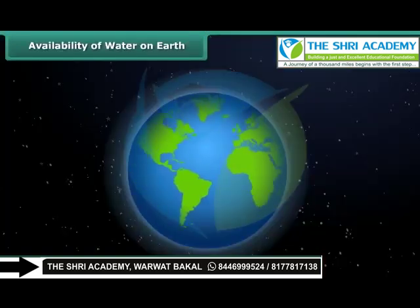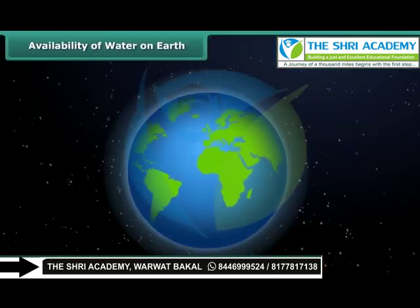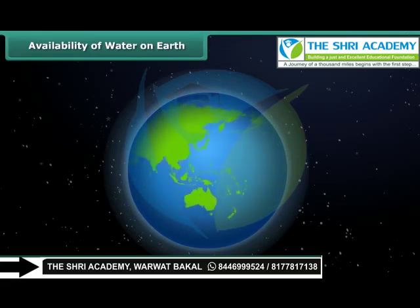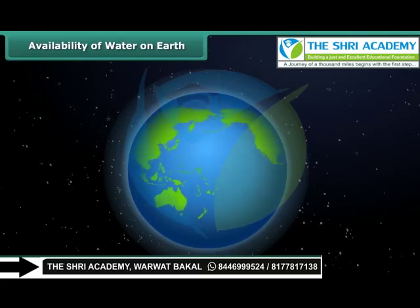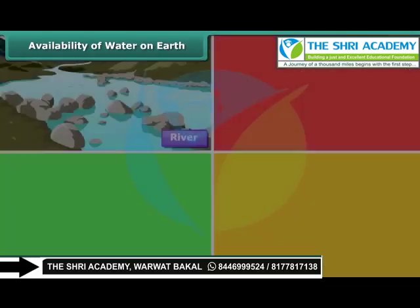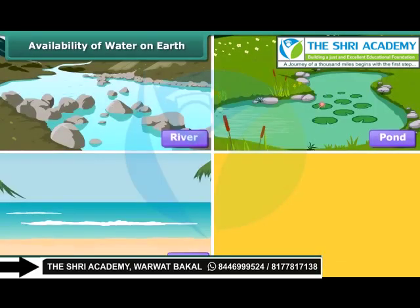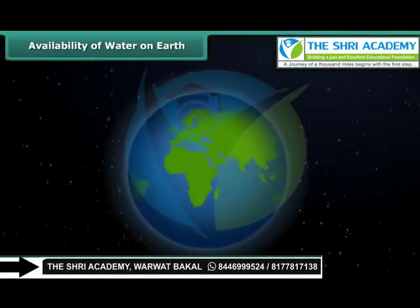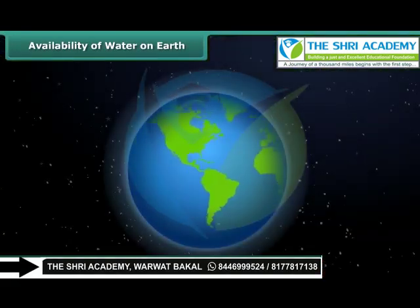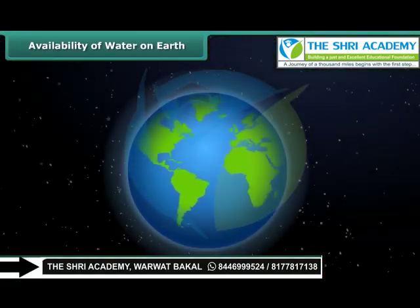Earth is called the blue planet. Can you guess the reason? Water covers 71% of earth's surface in the form of rivers, ponds, oceans and streams, thus making it appear blue in color when seen from space.